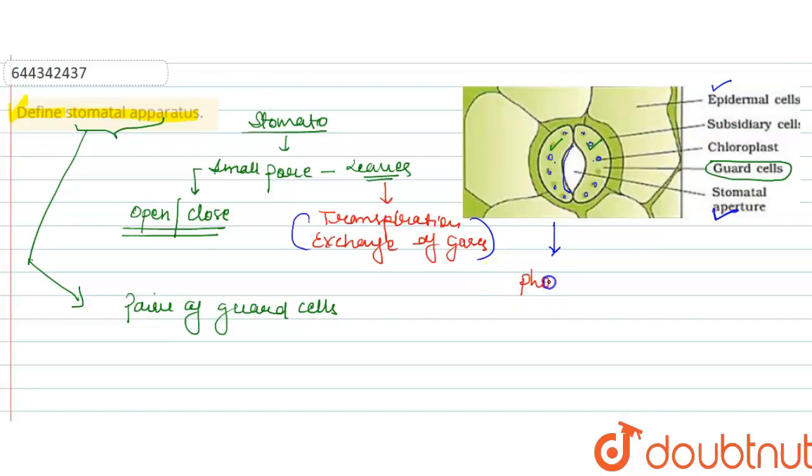So basically we know that the stomata is a small pore and you can see here this is the structure of stomatal apparatus. So guys this is our answer. Hope you understand well, thank you.